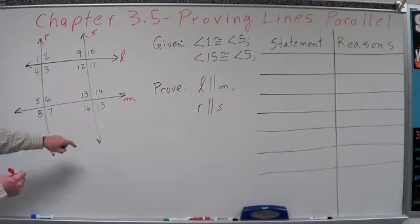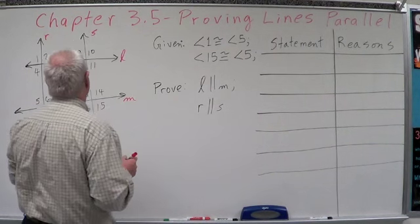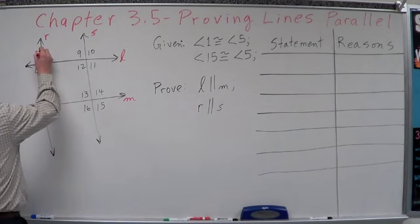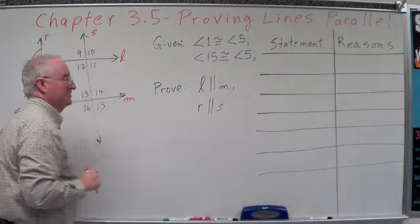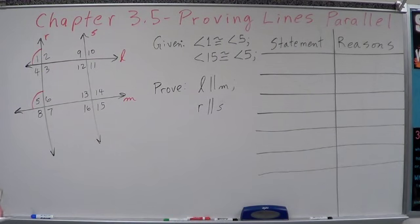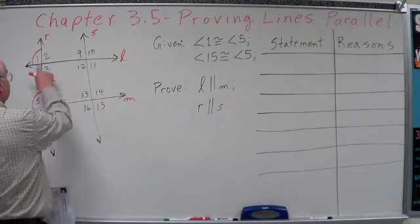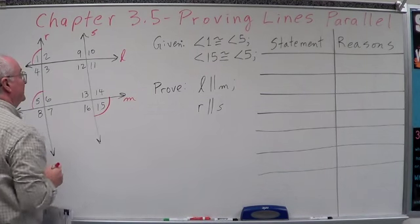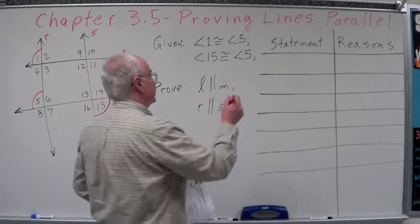What we have is a figure with lines L and M, and lines R and S. We're going to say that angle 1 is congruent to angle 5 — we'll mark angle 1 congruent to angle 5. And then angle 15 is congruent to angle 5. If that's true, what else can we say is true? Well, if this is congruent to that, and that's congruent to that, that's the transitive property.